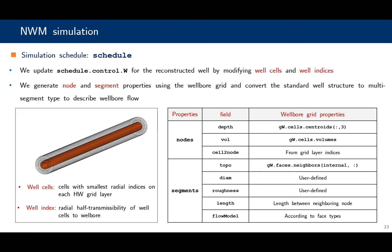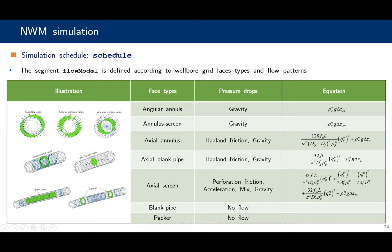In addition, we generate node and segment properties using the wellbore grid and convert the standard well structure to multi-segmented well type to describe the wellbore flow. We have divided the faces into seven types, and each has four flow models. The main flow direction is the screen flow, which has four flow pressure drop terms.